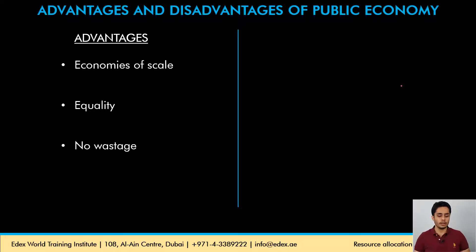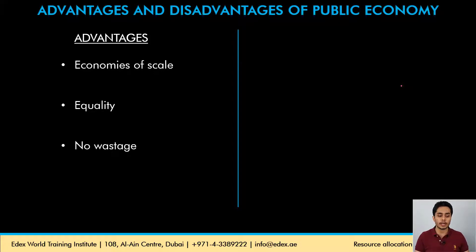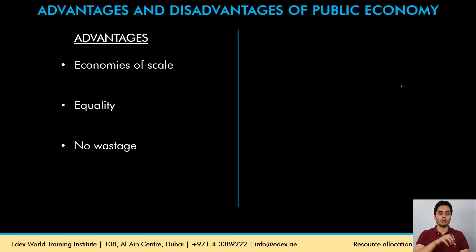The second advantage is equality — there would be minimum inequality in distribution of income and wealth because the government treats the entire society as equals. They produce the same set of goods for all members of society and do not differentiate between the rich and the poor. Additionally, there is no wastage of resources since there is no competition — all resources can be utilized in production of maximum goods and services for the people.